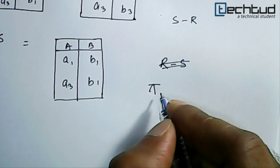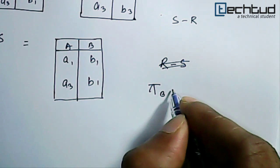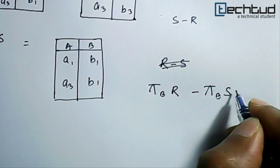Project, and what we will project? That is B from relation R minus project B from relation S. If we do this, in this case what will be our answer?